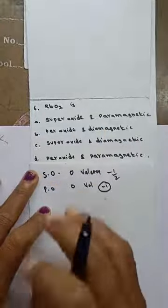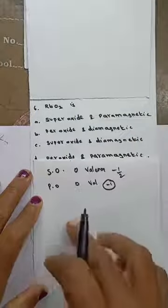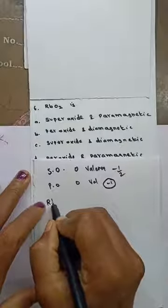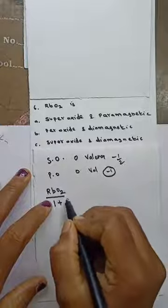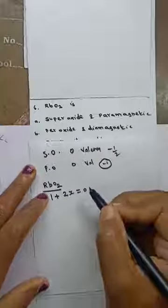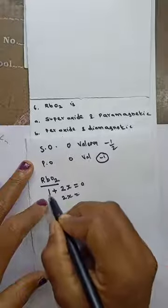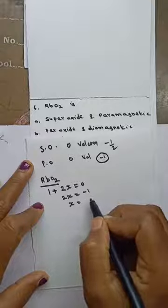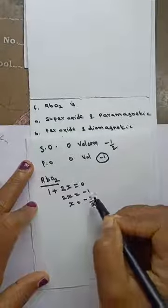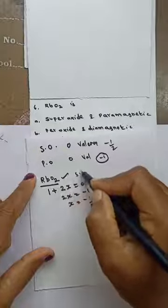To find the oxygen oxidation state in RbO2: rubidium is an alkali metal with oxidation state +1. Setting up: 1 + 2X = 0, so 2X = -1, giving X = -1/2. Since oxygen valency is -1/2, RbO2 is a superoxide.